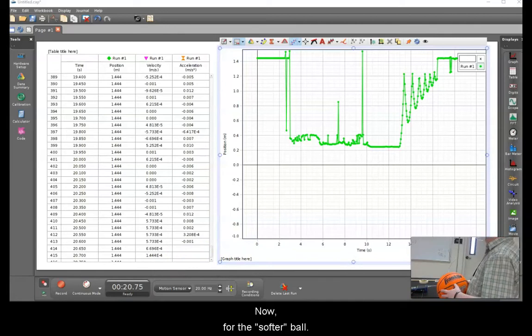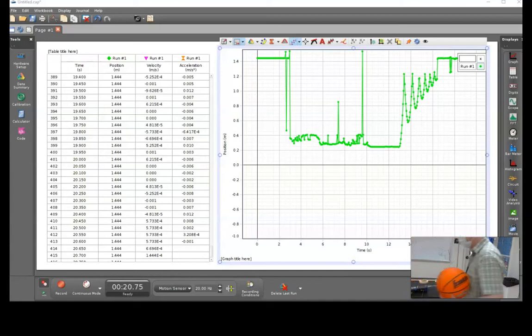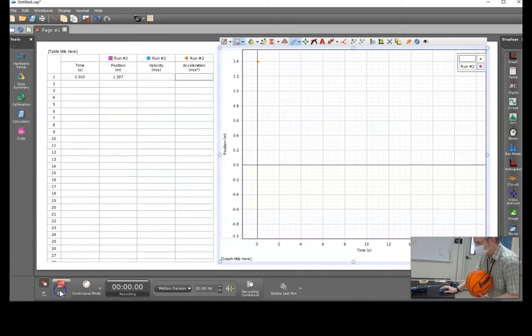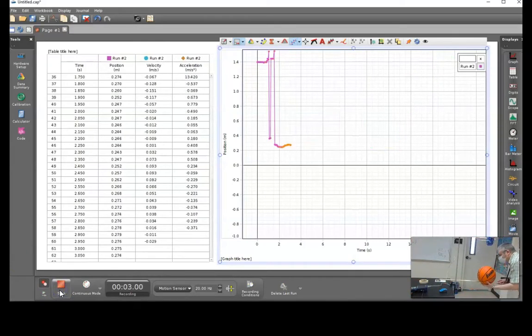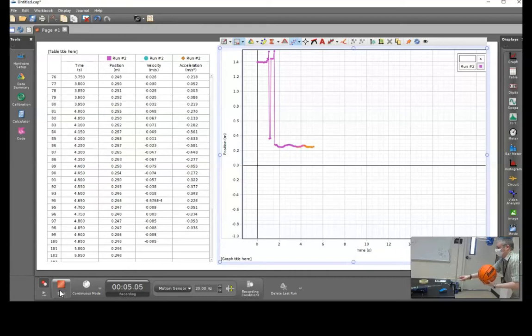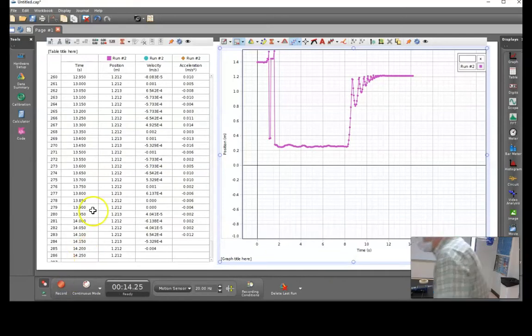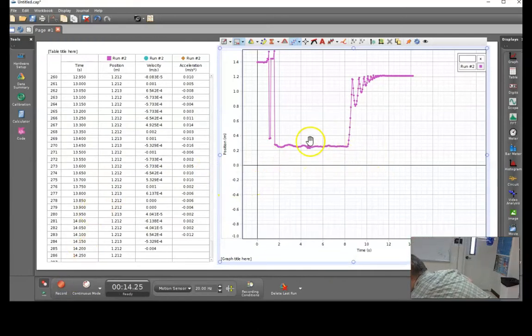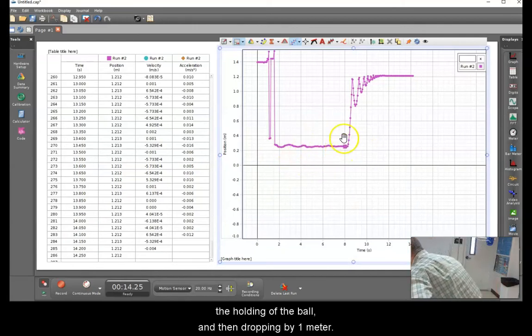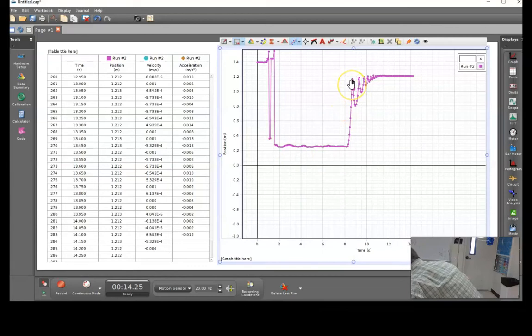Now for the softer ball. Again, notice the holding of the ball and then dropping by one meter. However, notice that in this case there did seem to be a systematic drift of the ball.